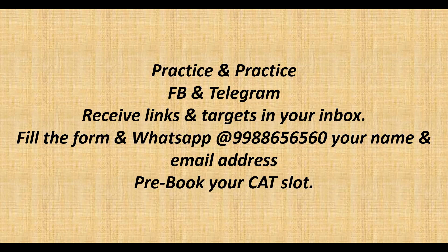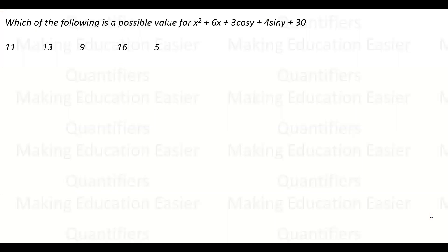Let's see the questions now. The questions are from algebra. The first question says: which of the following is a possible value for x² + 6x + 3cos(y) + 4sin(y) + 30? When we're talking about possible value...